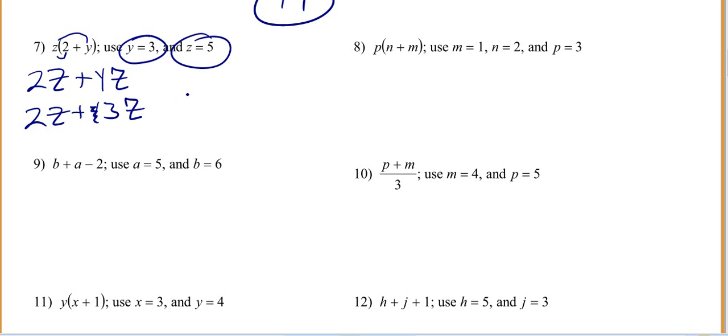Now everywhere I see a Z, I'm going to put a 5. So I want to do 2 times 5 plus 3 times 5. I've got 10 plus 15, because 2 times 5 is 10, 3 times 5 is 15, which gives me 25.